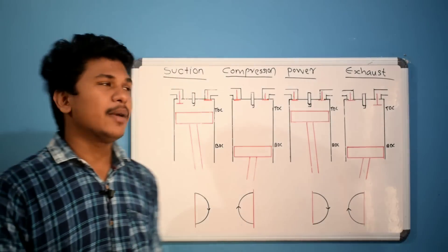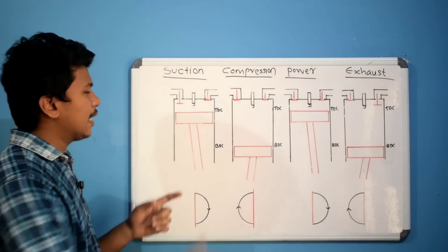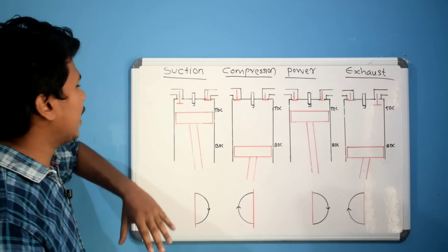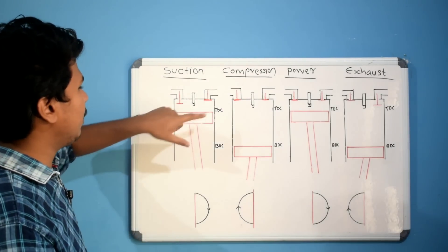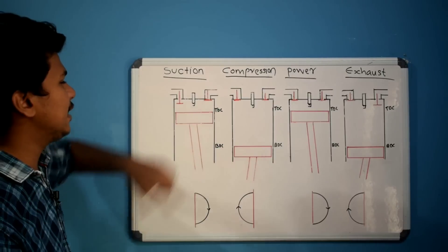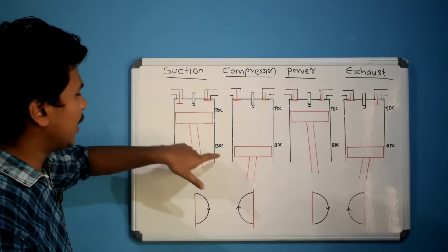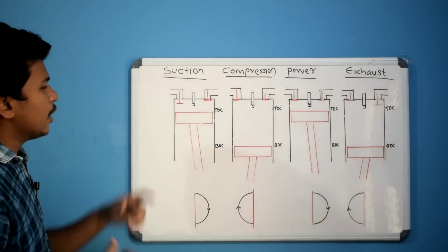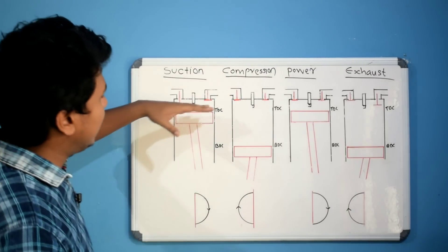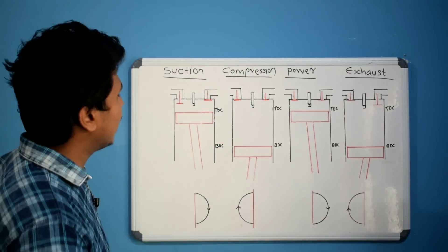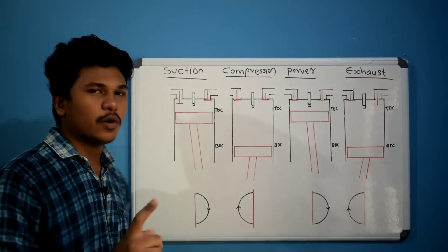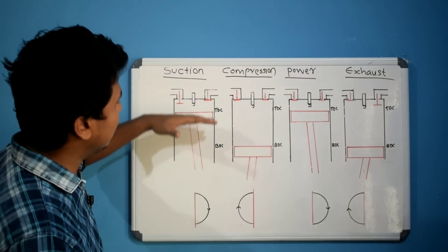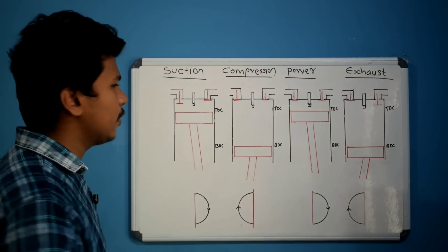This is a piston. This piston has a maximum limit — the top dead center, or TDC — and the minimum limit is BDC, the bottom dead center. If the piston moves from TDC to BDC, or from BDC to TDC, you'll have one stroke.